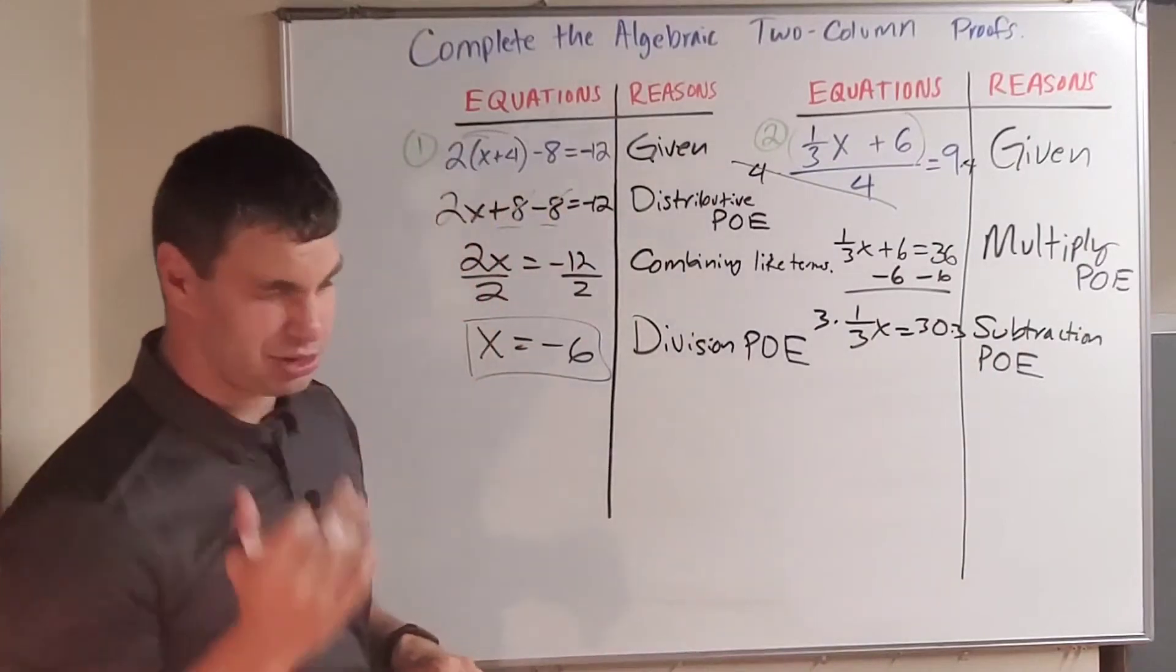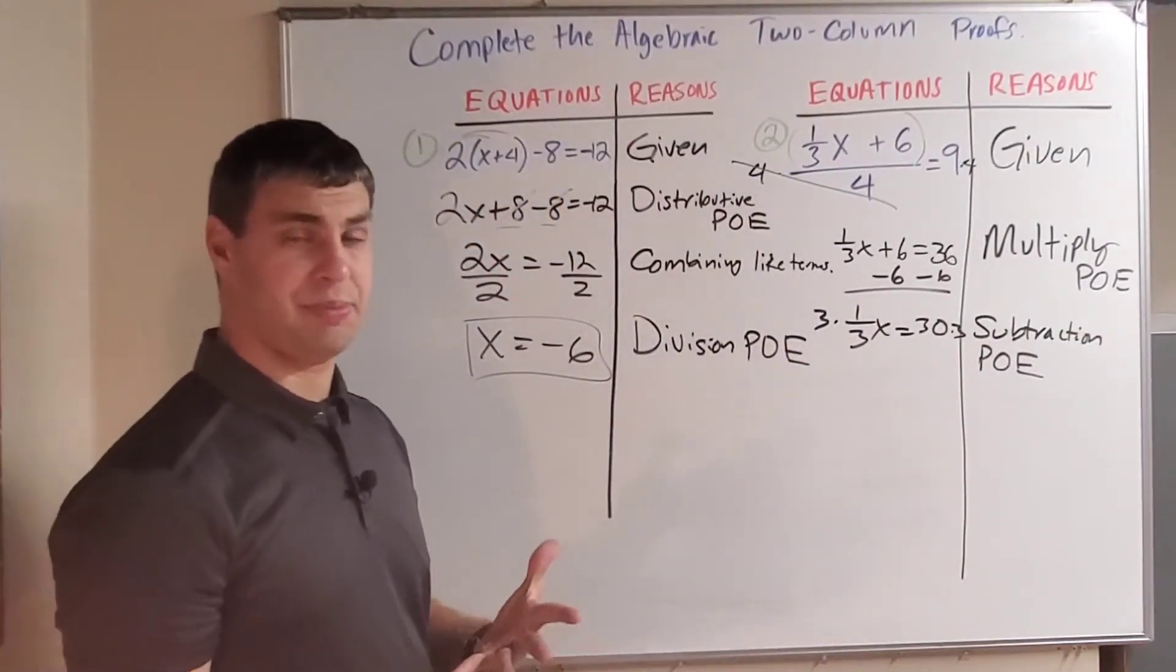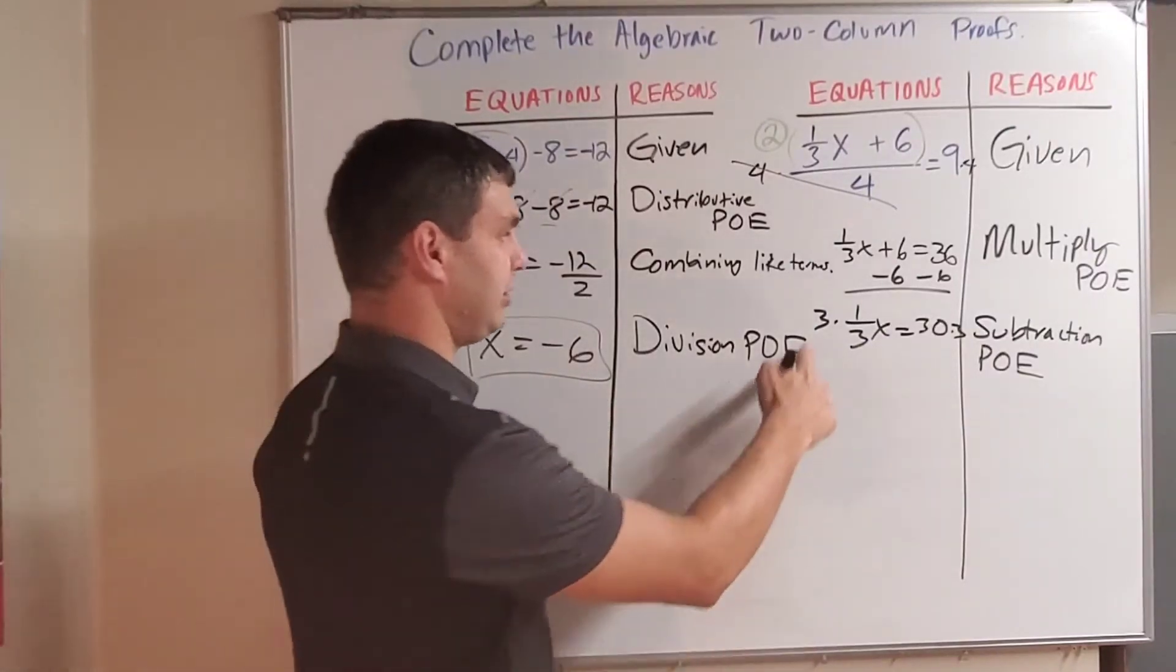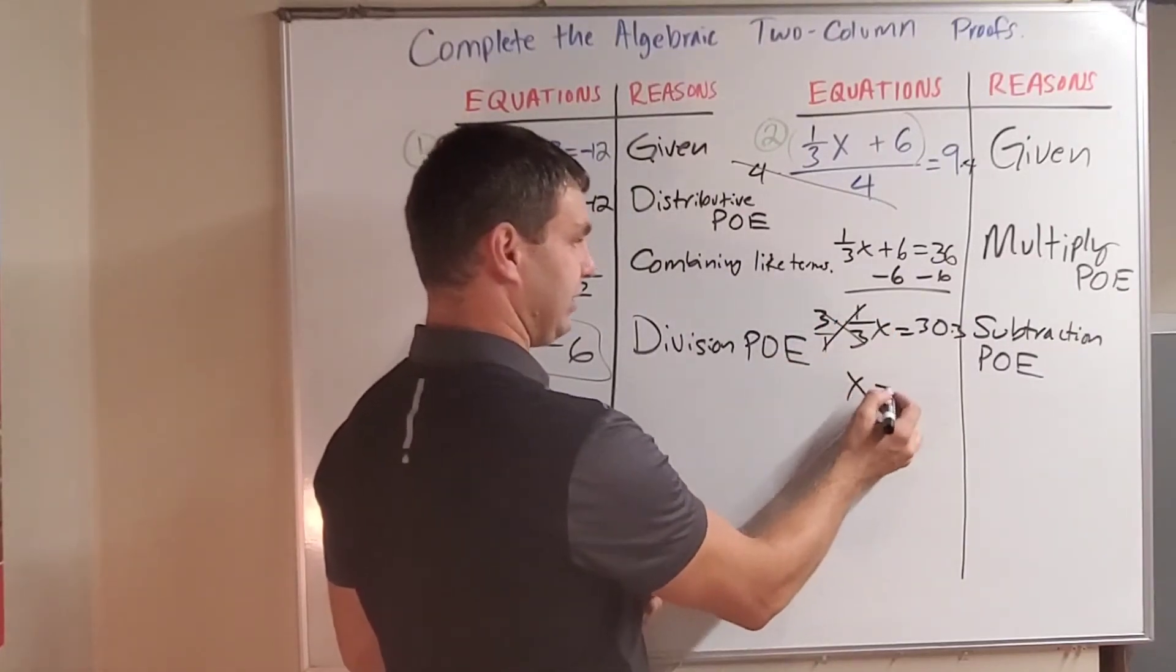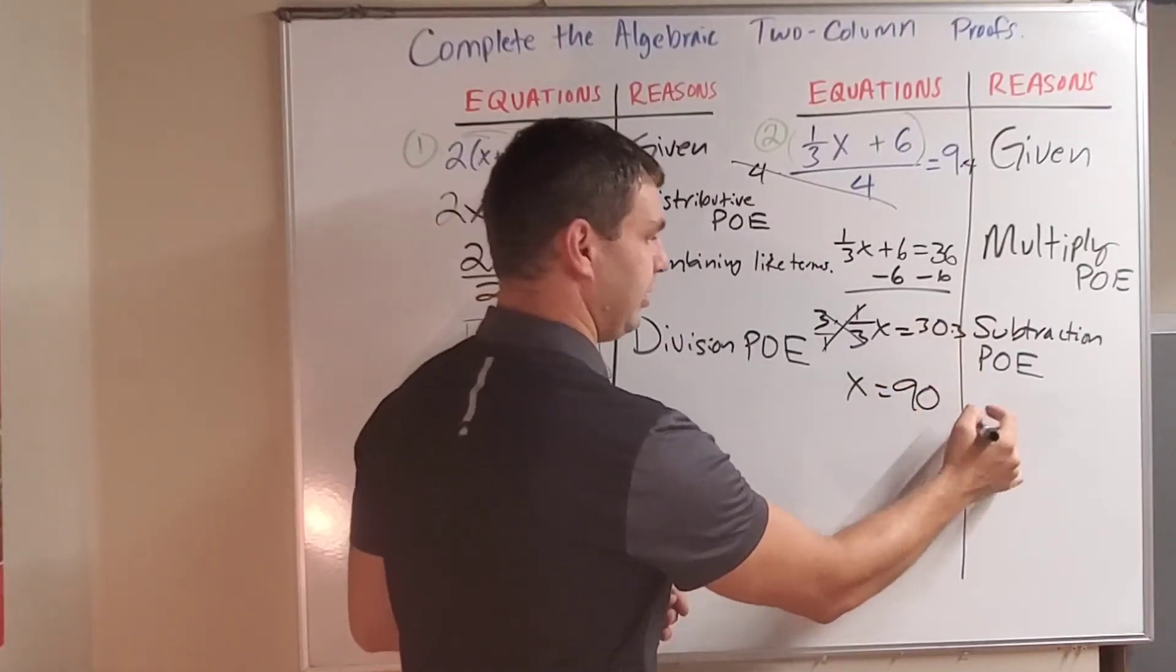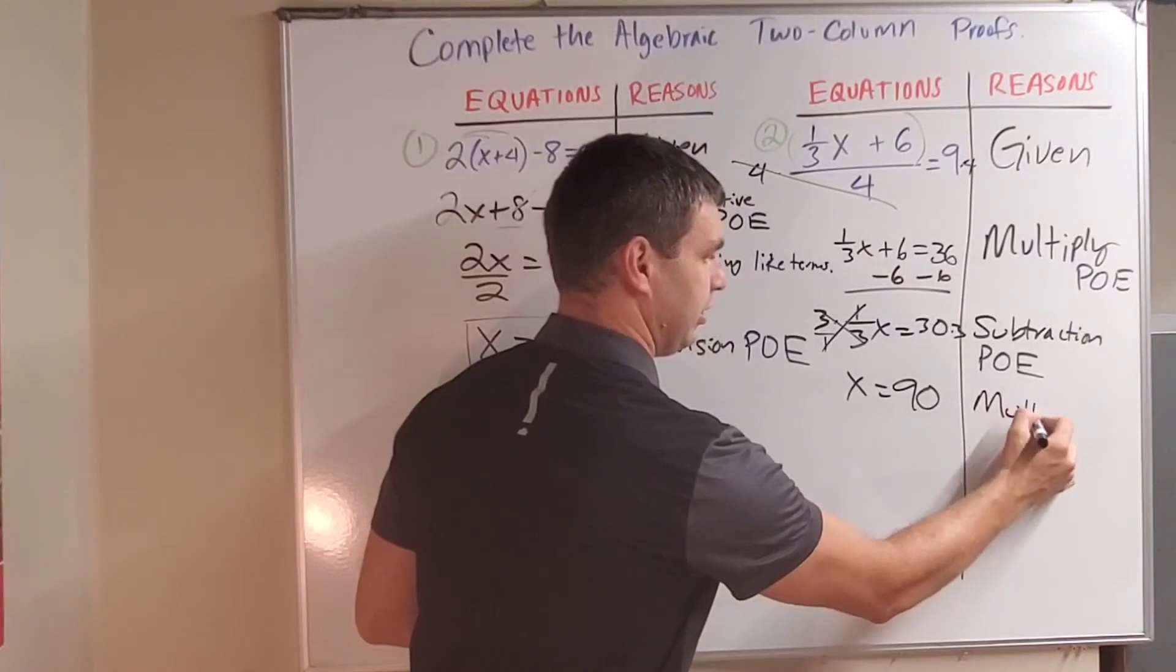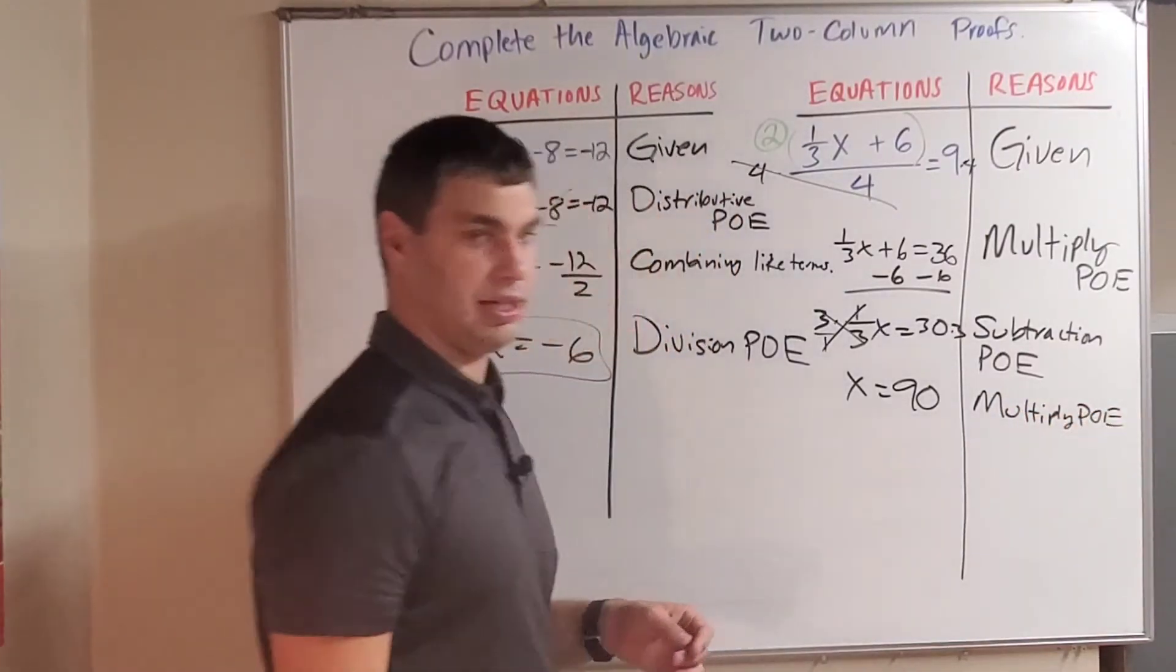There's a couple of options you could do here. You could actually divide both sides by one-third. That's the same thing as multiplying by 3. Remember when you divide by a fraction, you flip and multiply. So I like to just multiply by 3/1. That's going to cancel both of these and give me x equals 30 times 3 is 90. And again, I did that by multiplying. So let's say again, multiply property of equality.